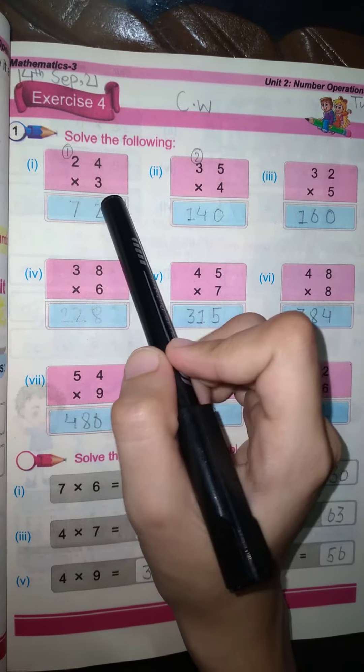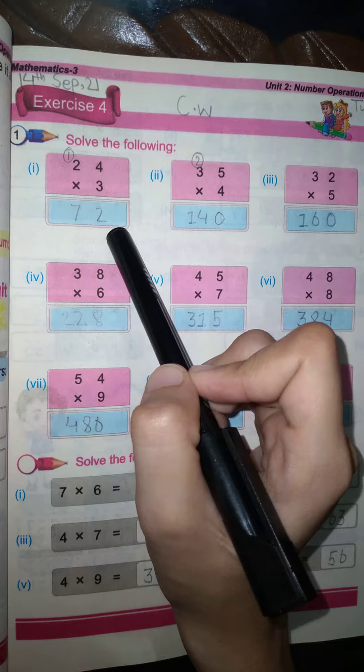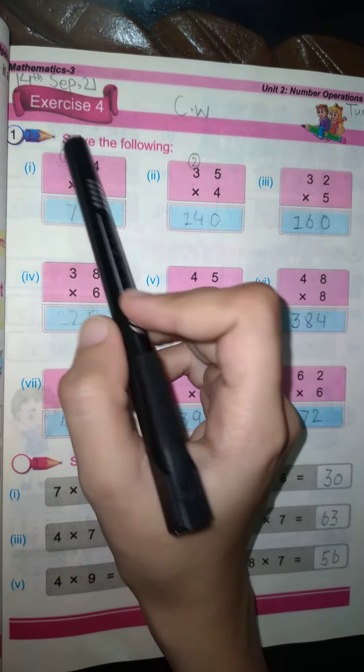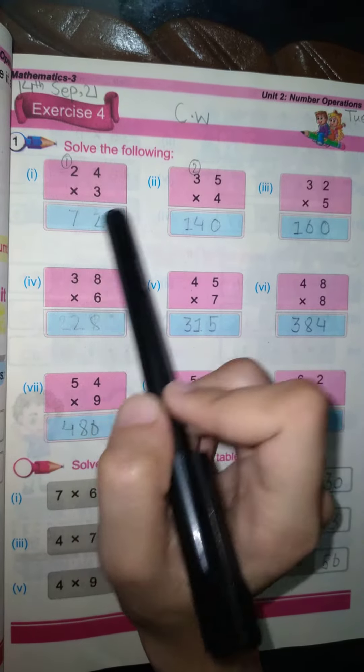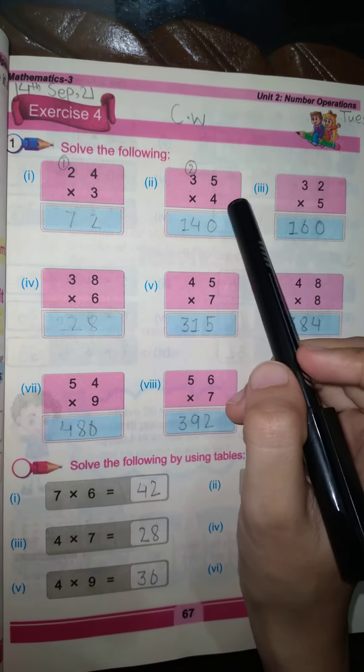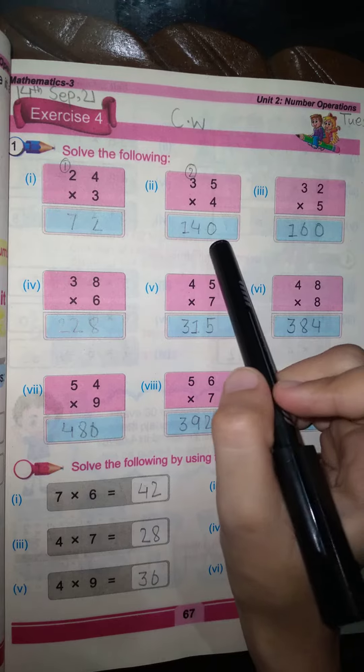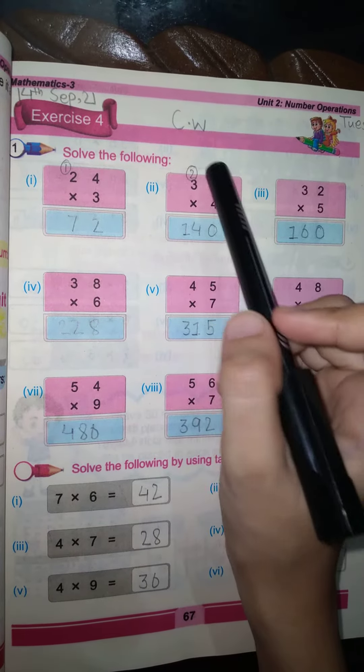First sum: three fours are twelve, write two here and one is for carry. Three twos are six, and plus one is seven. Seventy-two is the answer. Next one: four fives are twenty, zero here and two for the carry. Four threes are twelve and plus two, so the answer is 140.